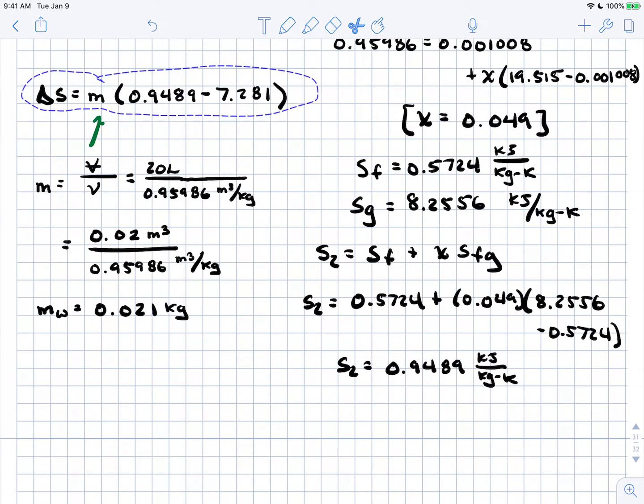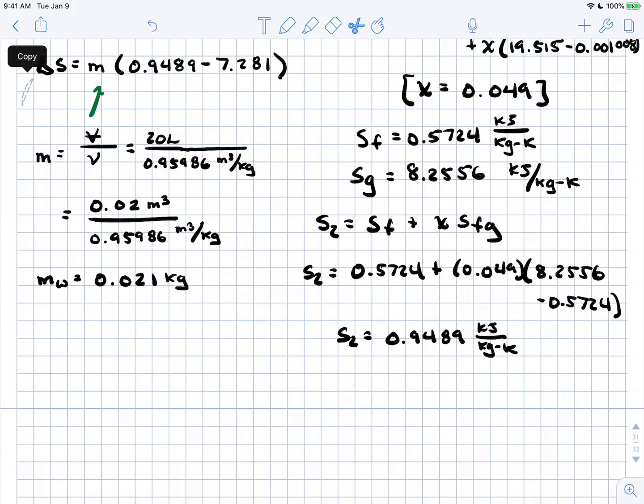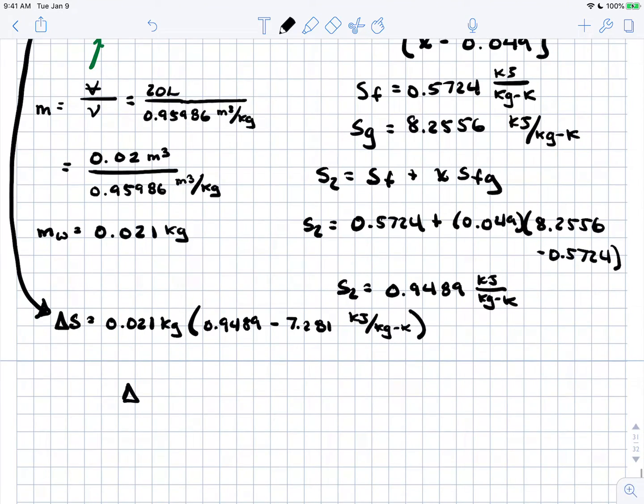Let's calculate our final answer. We can already see this will be negative. Delta S equals mass, 0.021 kg, times (S2, 0.9489, minus S1, 7.281) kJ/kg·K. I calculate this to be negative 0.133 kJ/K.